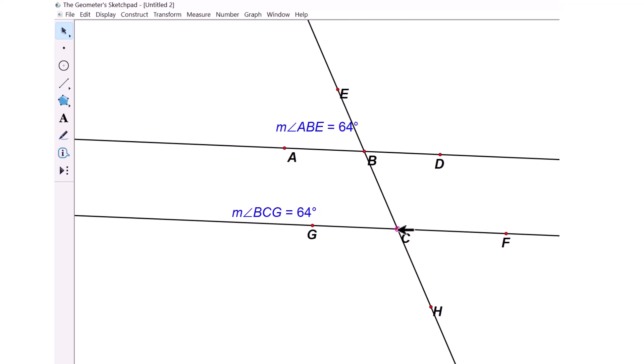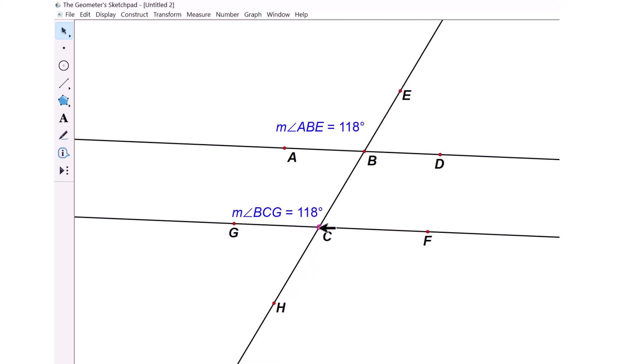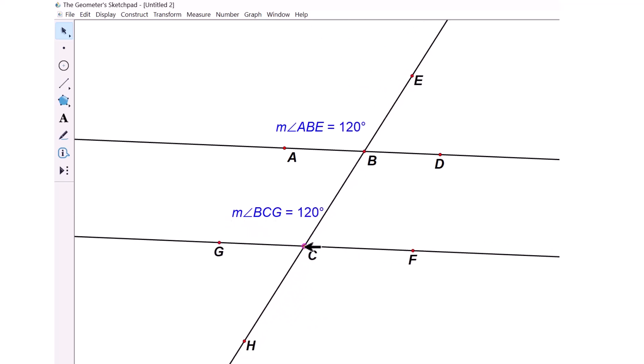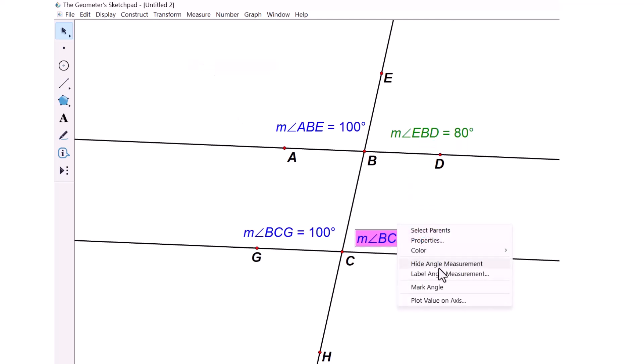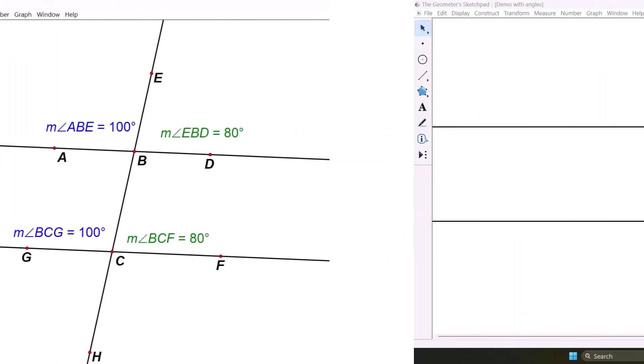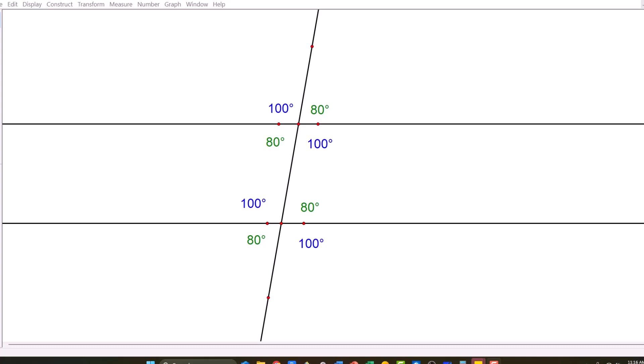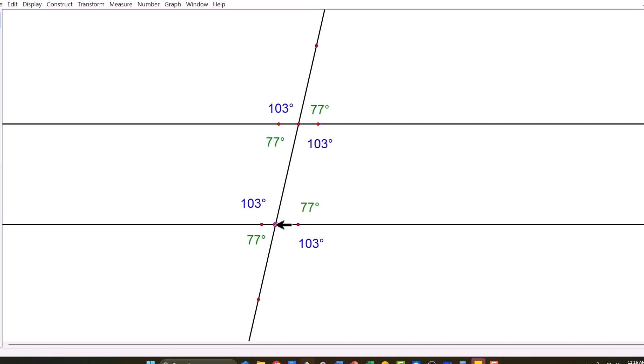Now, look at this. I filled in the angle measurements for corresponding angles. Those 120 degrees, those are corresponding angles. The corresponding angle to the 80 is also 80. Flipping over to this screen, I still have the 100s and the 80s on here. But I'm going to change that.